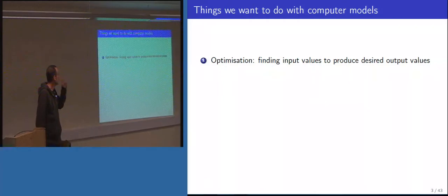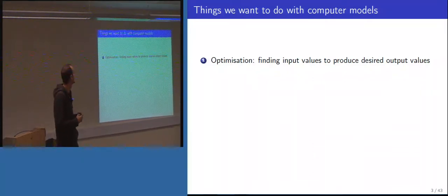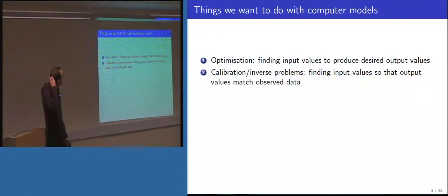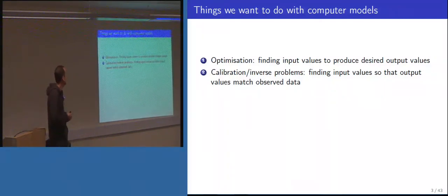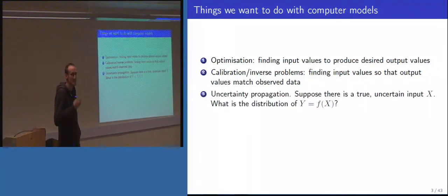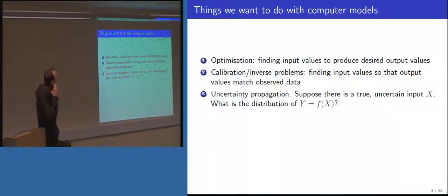What might we want to do with these models? We might start with optimization — finding what input values produce either the maximum output or output in a particular range. Related to this is calibration: searching for inputs that when plugged into the model give output values matching observed physical data. Another area is uncertainty propagation: we might have a fixed uncertain input we don't know, or a population of input values, and want to understand the corresponding uncertainty in the output.